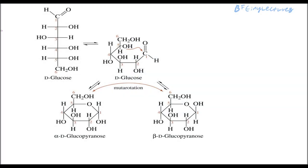In this video we will continue our discussion over carbohydrates. I want to bring your attention to this figure. Remember in the last video I said sometimes you're going to have an alpha anomeric carbon or a beta anomeric carbon. You're probably wondering how does the change between alpha and beta occur? Is there a separate reaction that always gives us beta or always gives us alpha? Not necessarily.